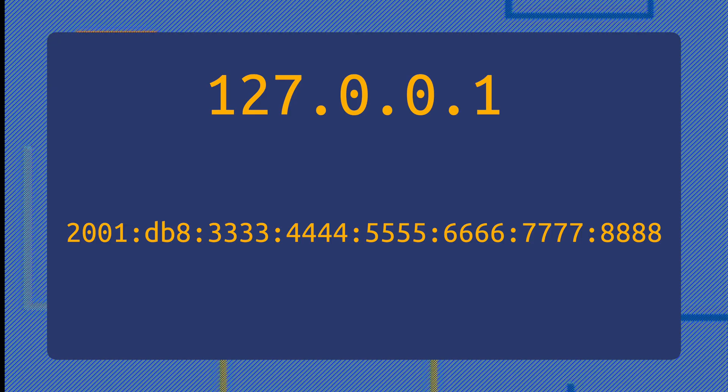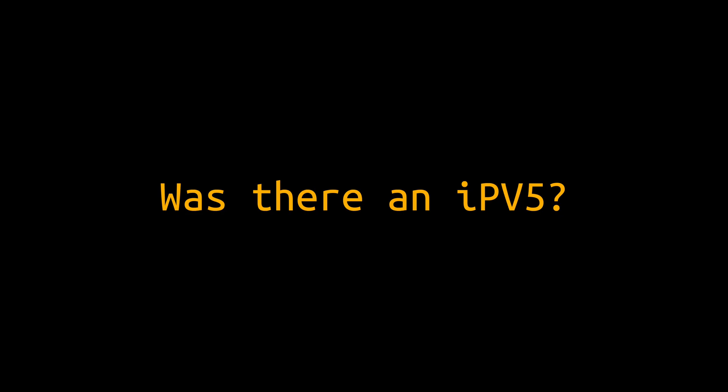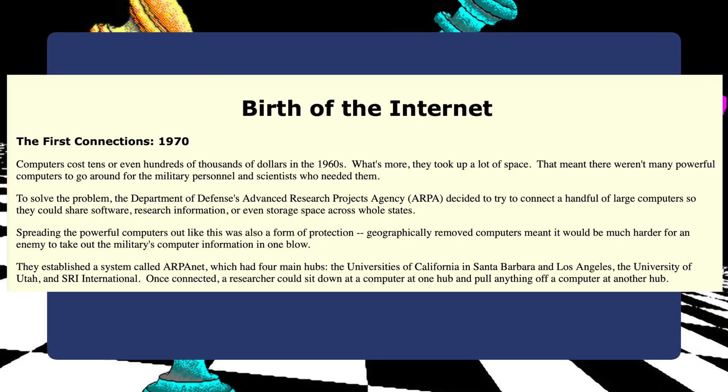But an obvious question: if this is IPv4 and this is IPv6, was there an IPv5? Let's go back to the 1970s, in the very early days of the Internet before we know it today. Researchers at DARPA and various other universities were experimenting with basic point-to-point networks. These networks were slow, and the potential of what the Internet is today was not totally obvious to all those involved. Some researchers initially saw the Internet primarily as a way to share expensive computing resources between research institutions.